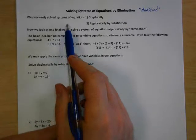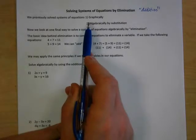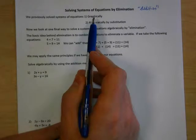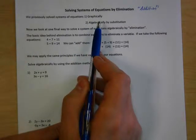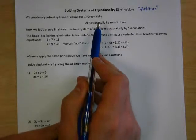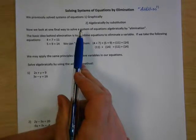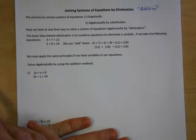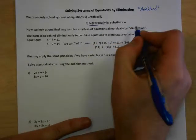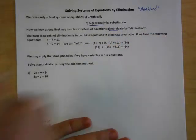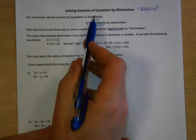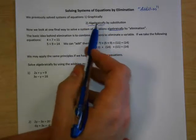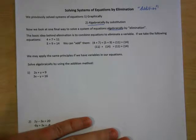We previously looked at solving systems of equations graphically and algebraically by substitution. Graphically, we graph the equations and see where they intersect. Algebraically by substitution, that's when we substituted expressions in for x or y. Now we're going to look at one final way to solve a system of equations algebraically by elimination.